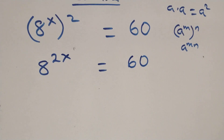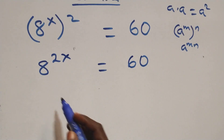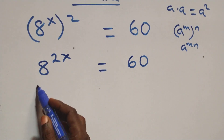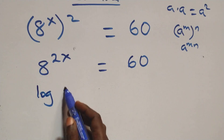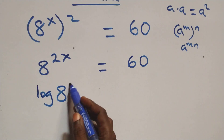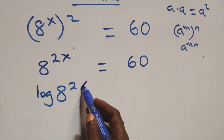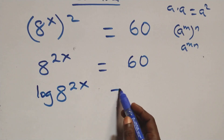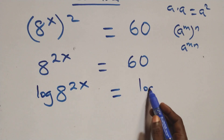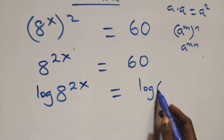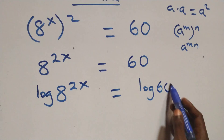The next step here, we take the log on both sides. At this we have log 8 raised to power 2x equals to log 60 from here.